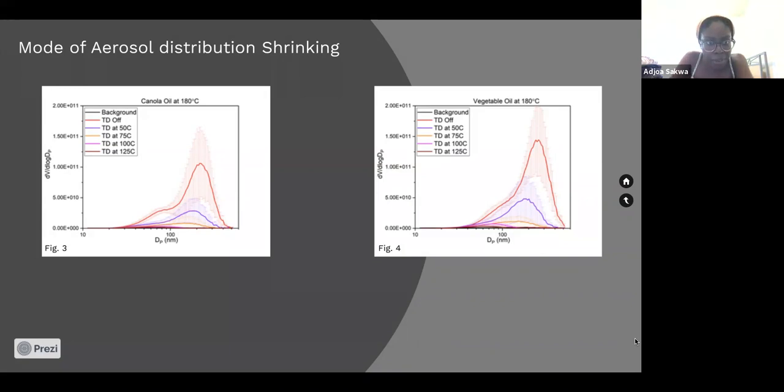And so the red was when the TD was off. So it was showing as the graphs go smaller and smaller, that's the increase in temperature.